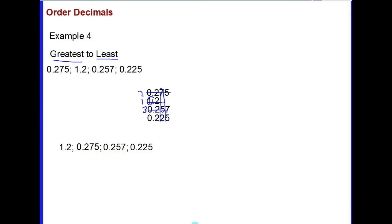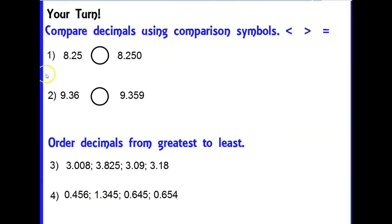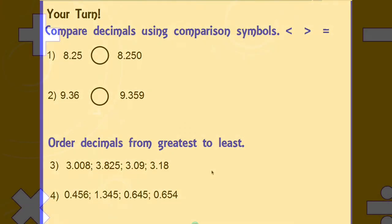For your turn, you are going to compare decimals using comparison symbols and order decimals from greatest to least. Remember to line them up as you work and use your place value knowledge. Go to Moto to let us know you watched the video, complete your WHISK, and don't forget to turn in your assignment. We'll see you in class tomorrow!